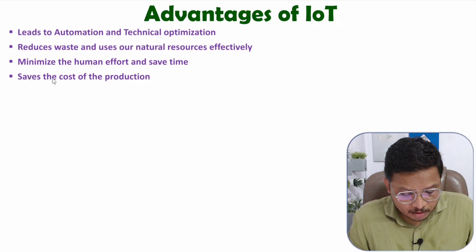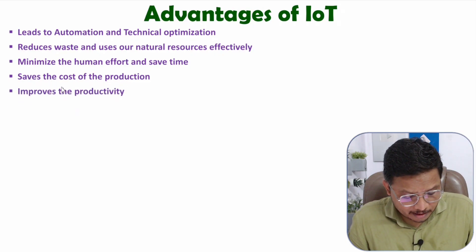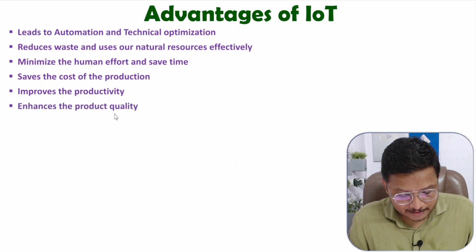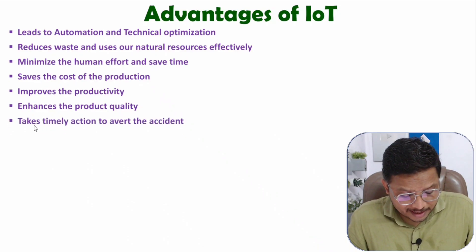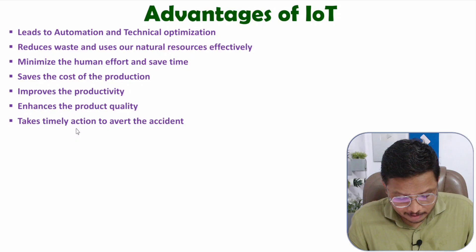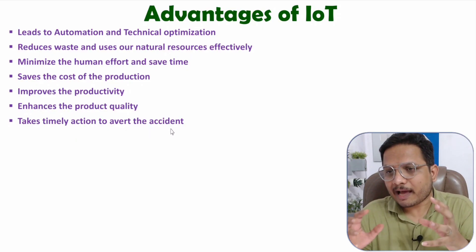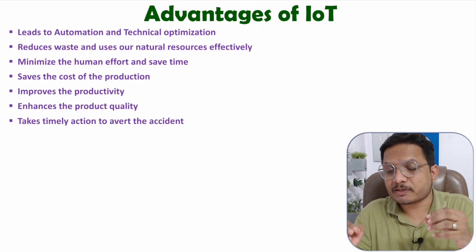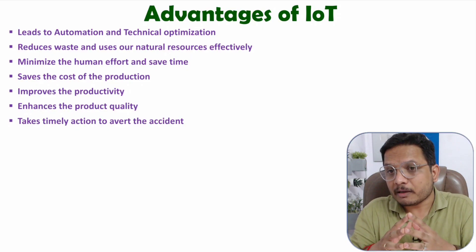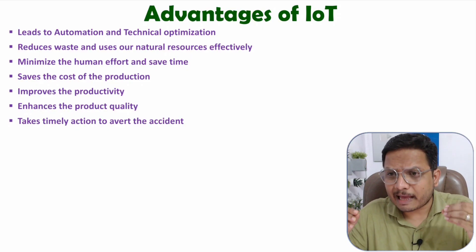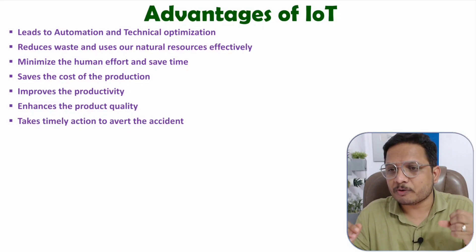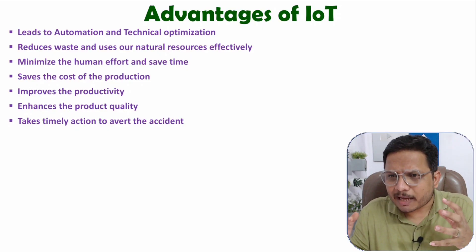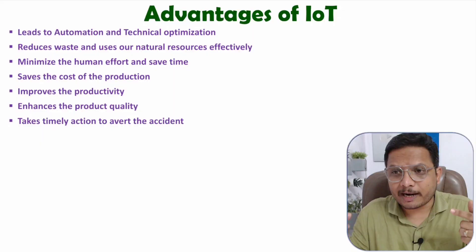Here, you will be saving cost of production, we will be having improved productivity in our application, and it will be enhancing product quality as well. We can have timely actions, and based on that, we can avoid some accidents. If you take actions manually, there is a possibility that you may not be able to take actions on time, and because of that there can be accidents. So in real-time and critical applications, it is highly essential that you have automation. If that automation is happening with the use of IoT, then there are many combinations that can be provided by which we can avoid accidents.